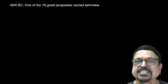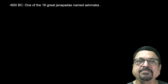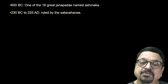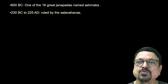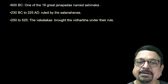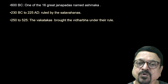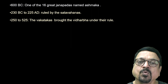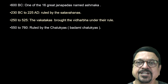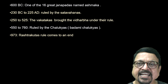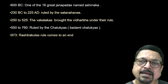Now in chronological order: at 600 BC, one of the 16 great Janapadas, named Ashmaka, was in Maharashtra. From 250 to 225 BCE, it was ruled by Satvahanas. In 550 to 760 CE, it was ruled by Chalukyas — the Badami Chalukyas. In 973 CE, Rashtrakuta rule came to an end. From 973 to 1180, it was ruled by Western Chalukyas, also known as Kalyani Chalukyas, with capital at Badami.